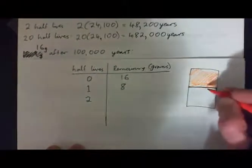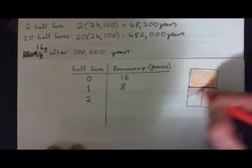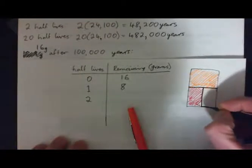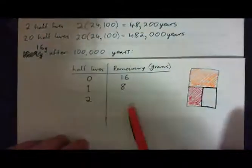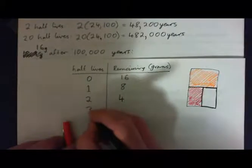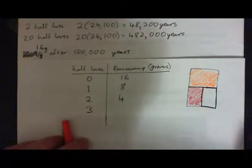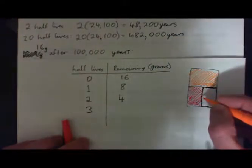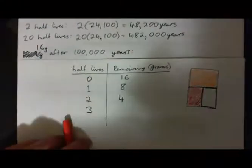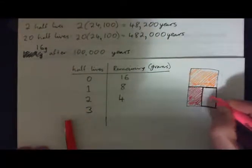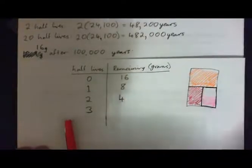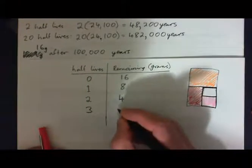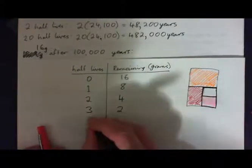After two half-lives, another half of the plutonium has disintegrated, reacted, and disappeared and gone away — it's completely gone. You're just left with basically a quarter of what you started with, so half of what was there before. Now we've just got 4 grams left. After three half-lives, another half of what was remaining goes away. Half again goes away, and now we're just left with this little bit here, which is actually one eighth — so now we're left with 2 grams. After four half-lives, half of the previous amount remains.